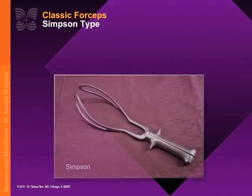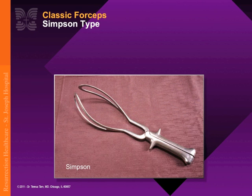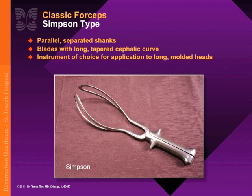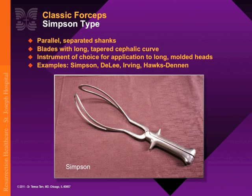The Simpson type forceps has parallel and separated shanks. The cephalic curve is tapered and shallow, thus accommodating longer molded fetal heads, and is especially useful for patients who have been pushing for some time.